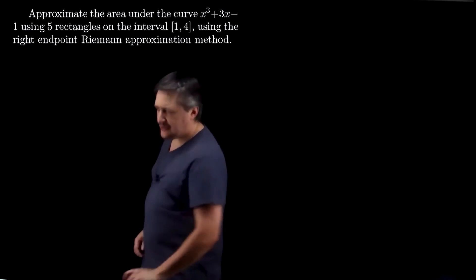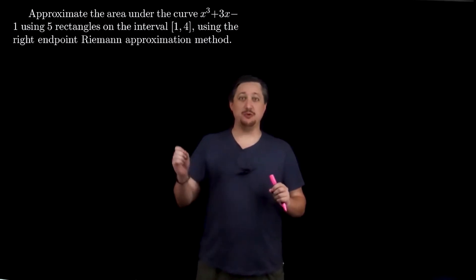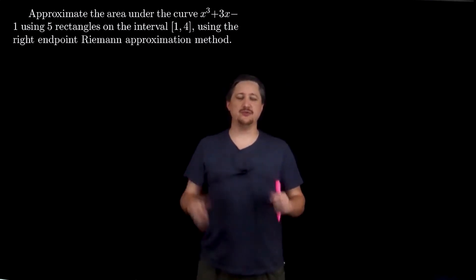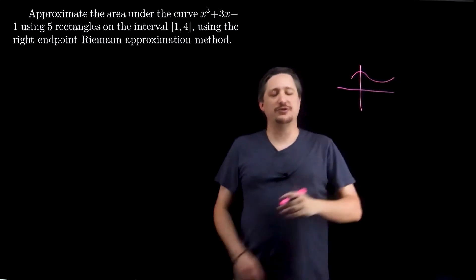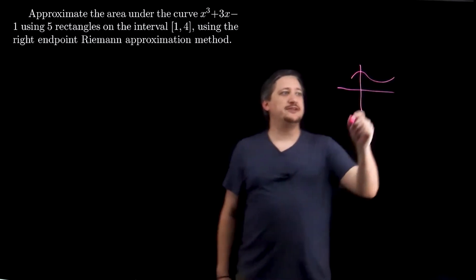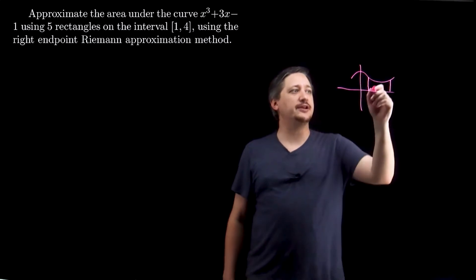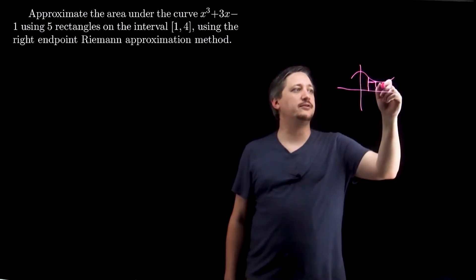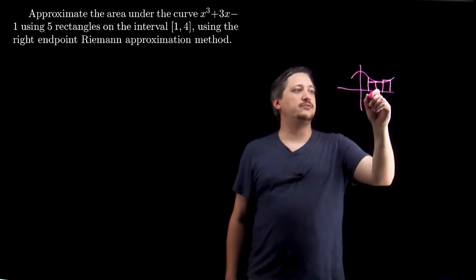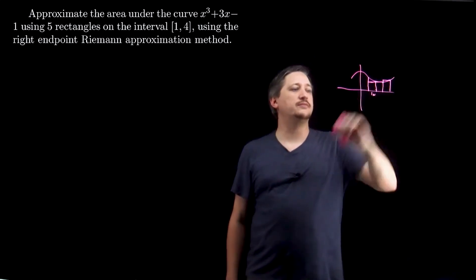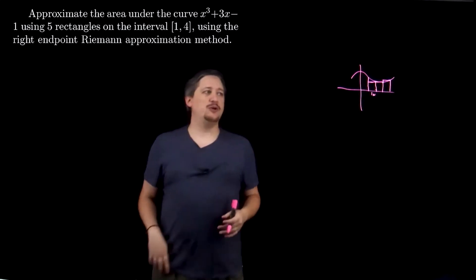It can be easy to forget the formula or how the right endpoint works — whether you have to go over a width or half width or no widths for that first one. One trick I use personally: just do a little sketch, a little cartoon sketch that has nothing to do with the problem. I think to myself, I want to do some number of rectangles — like three rectangles — using the right endpoint. That means I want this rectangle, that rectangle, and that rectangle. This shows me that my height is one width over, so my first rectangle isn't going to happen at my first x value — it's going to be one width over.